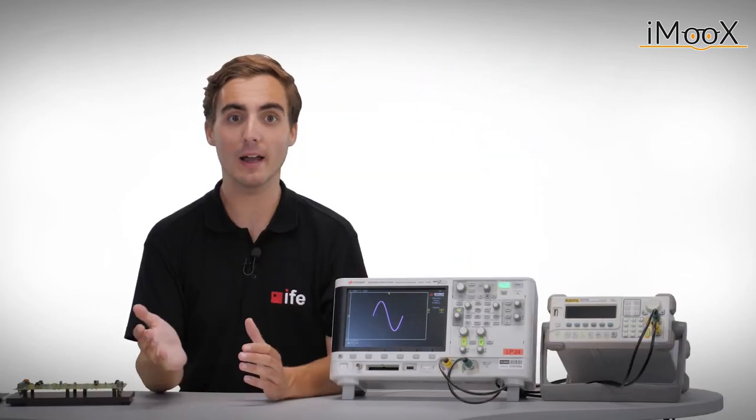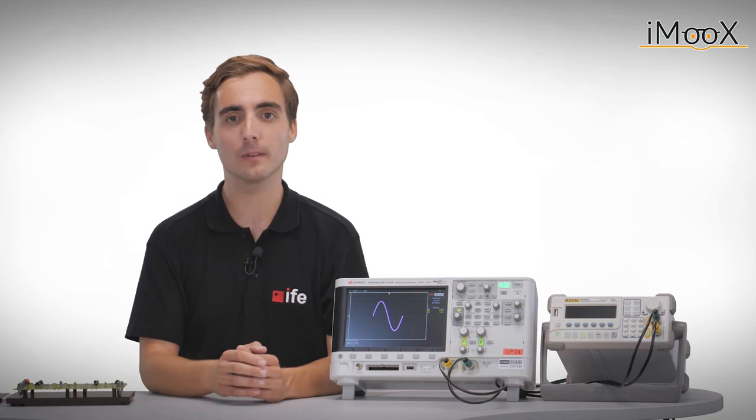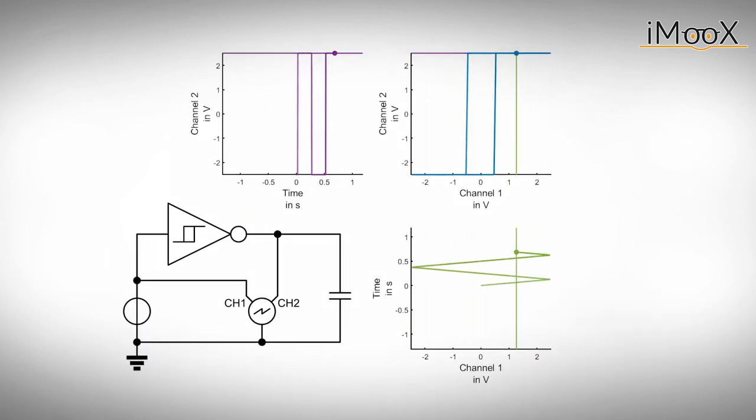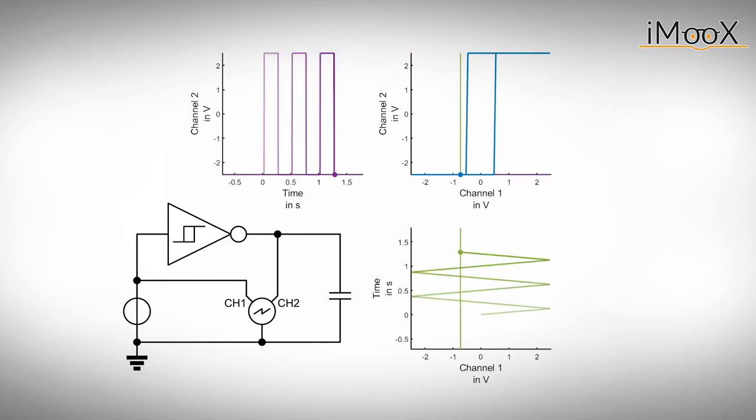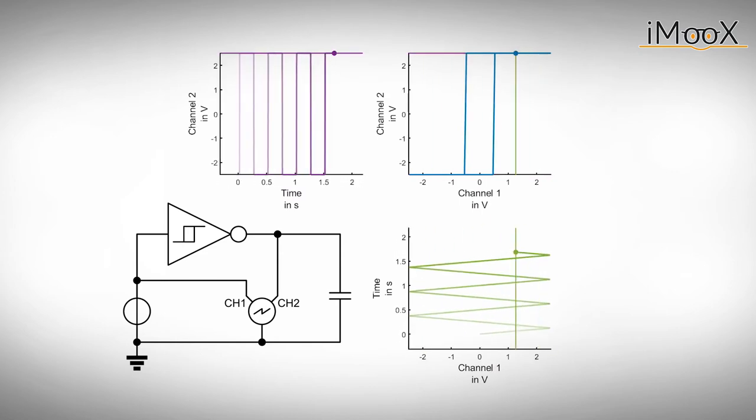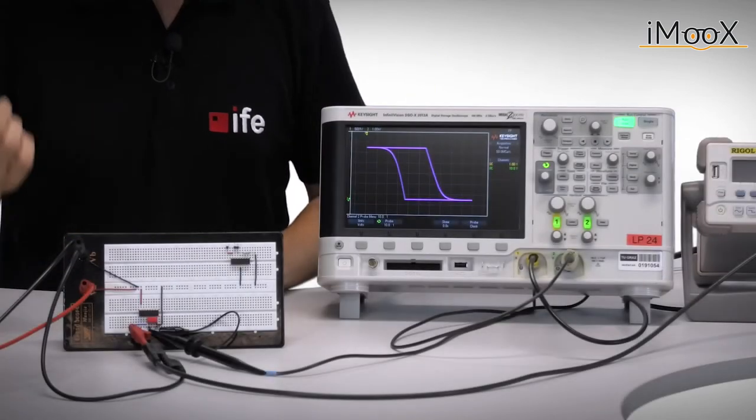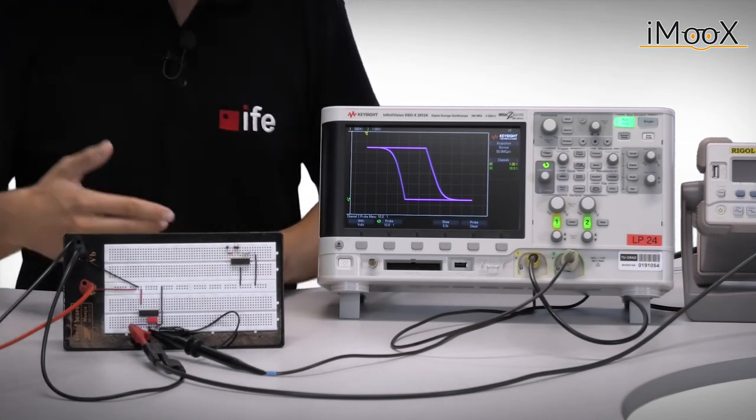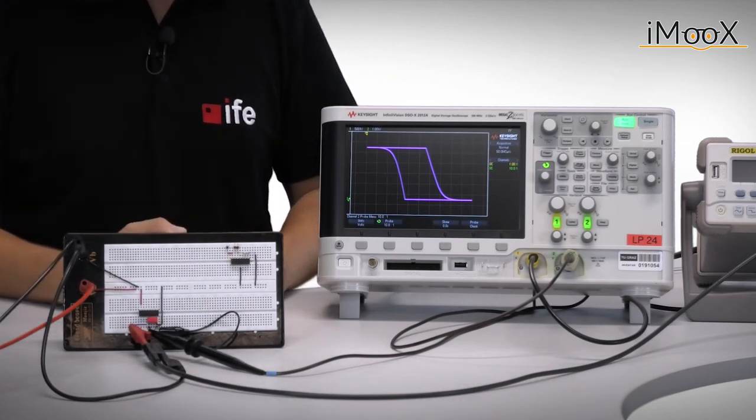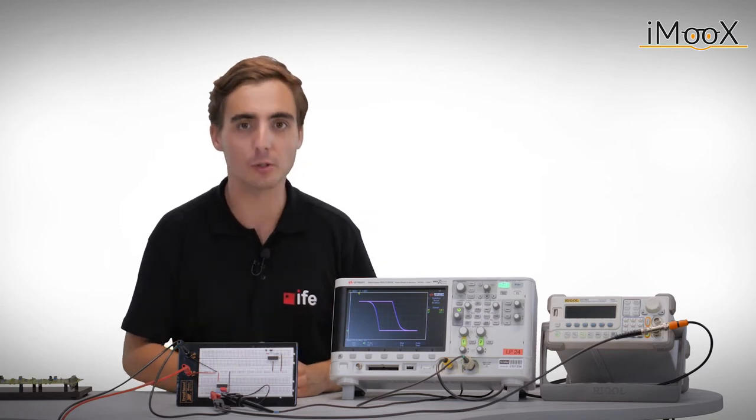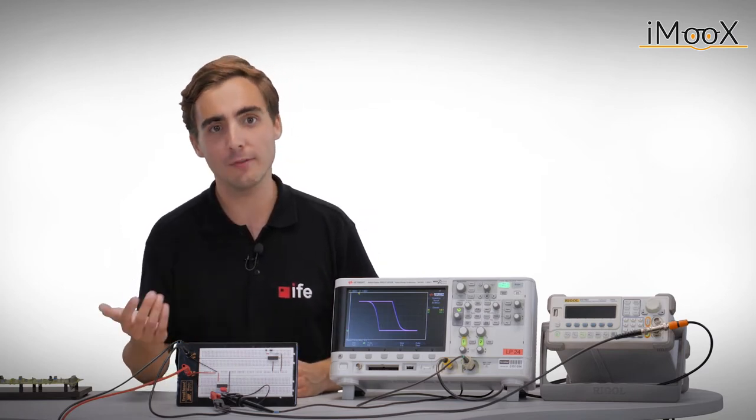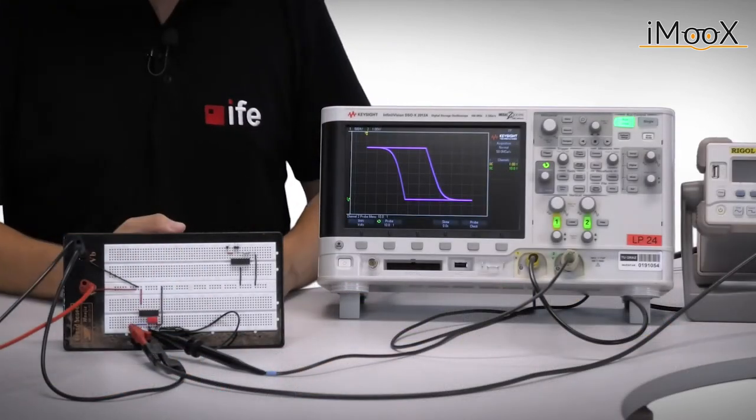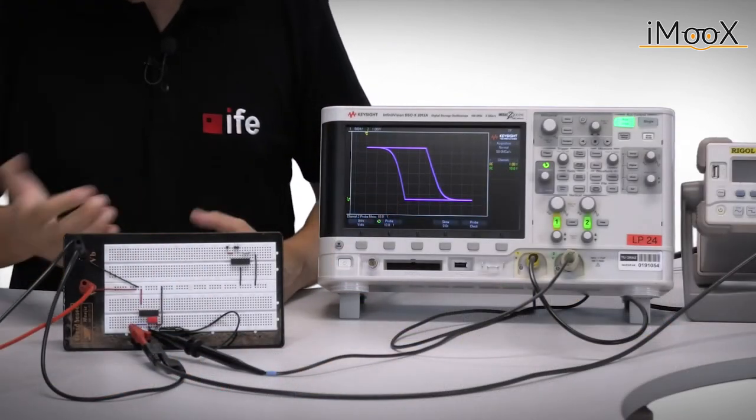Using the XY mode, we can also make hysteresis visible. In this exercise, we will use an inverting Schmitt trigger and put a triangle signal on its input. This triangle signal is our X input. The Y input is the output of the inverting Schmitt trigger. This gives the expected hysteresis curve. We have to admit that we cheated a little bit for this example, as we have added a capacitor, so that the edges become more visible.